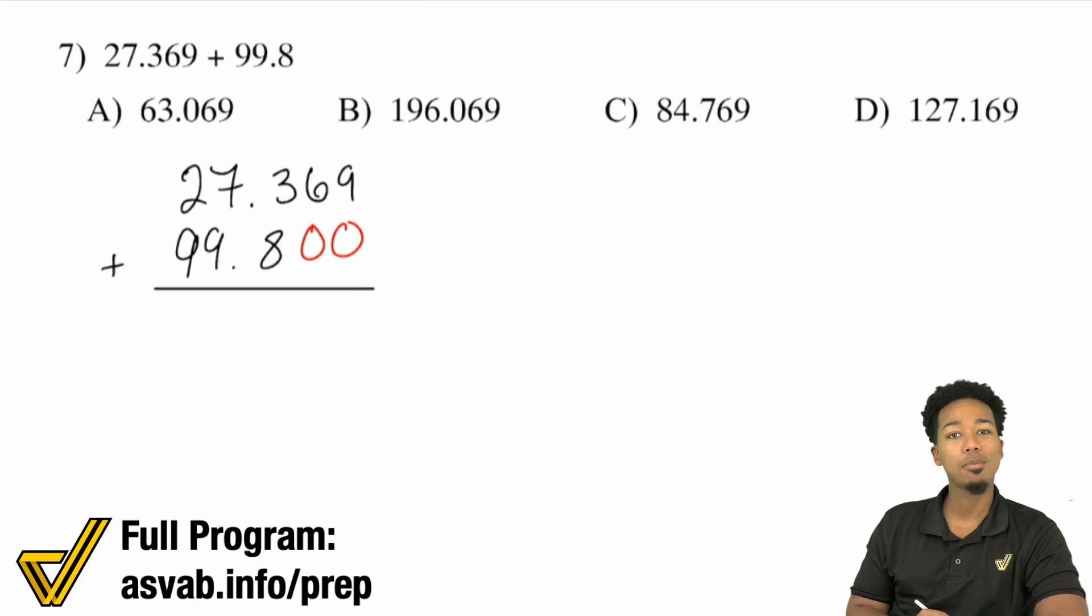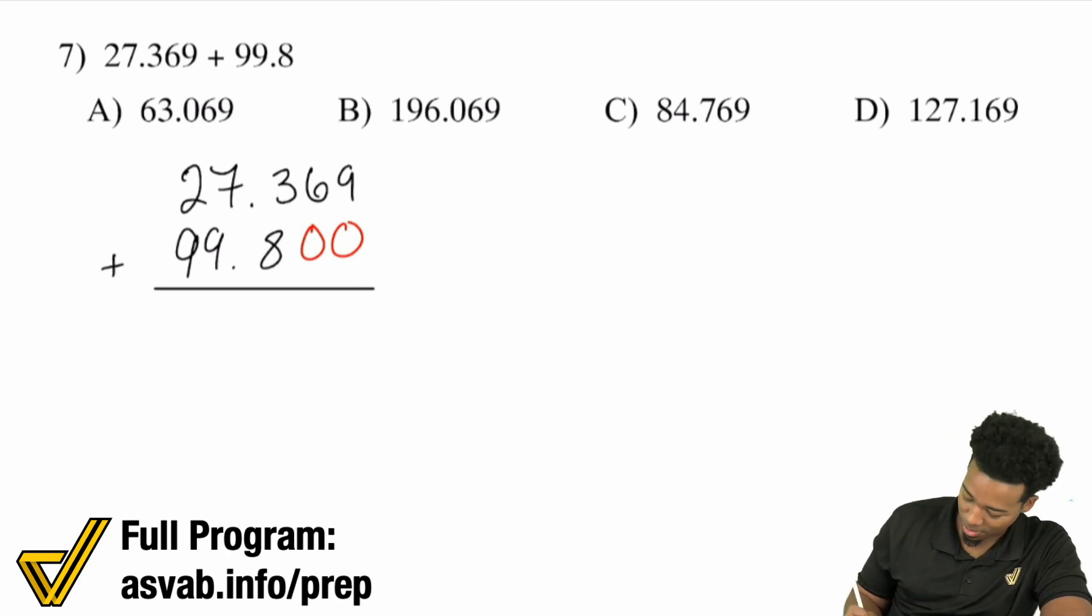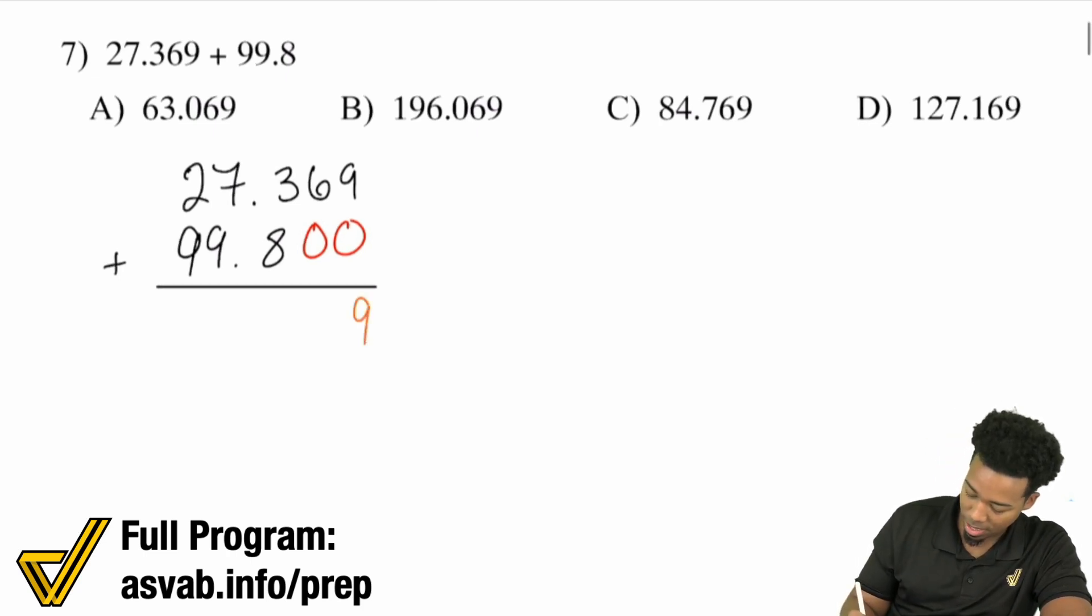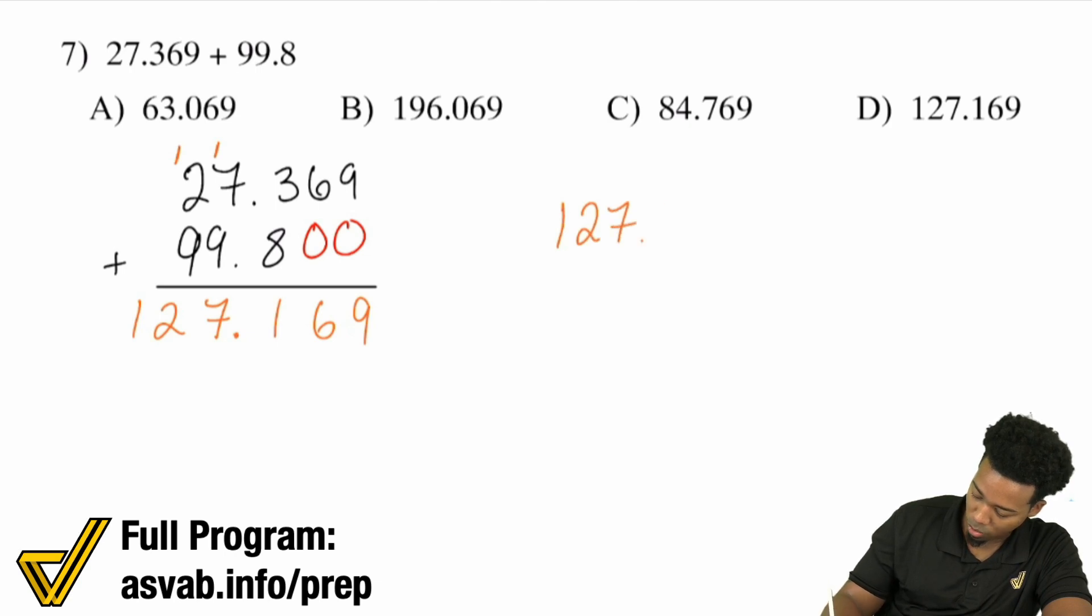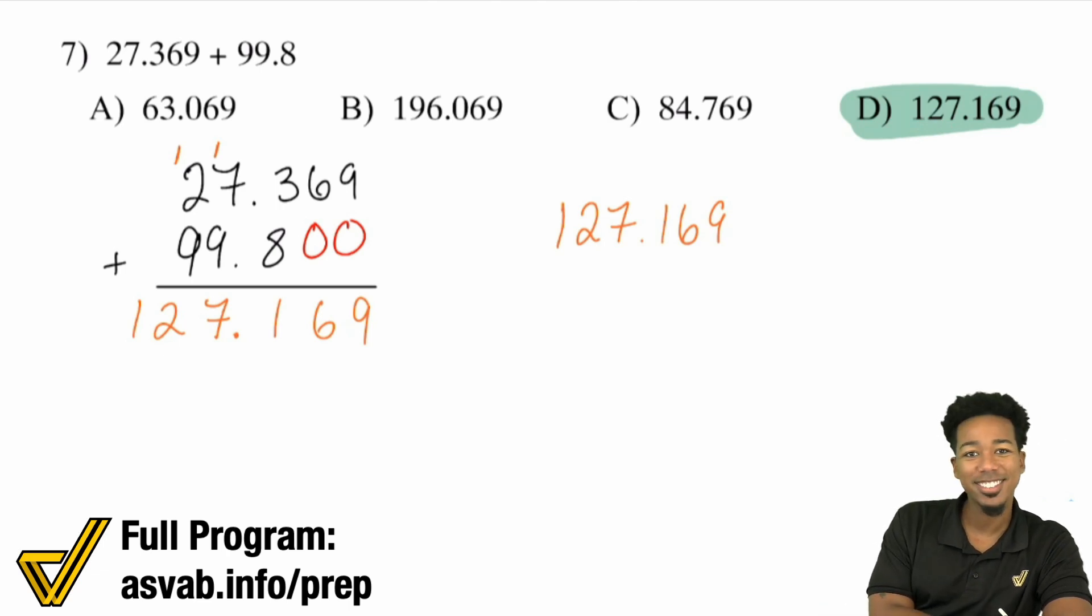So let's go ahead and take care of business. My math party people, we have 9 plus 0. That's going to end up being 9. 6 plus 0 is 6. 3 plus 8 is 11. Carry that 1. Then 1 plus 7 is 8. 8 plus 9 is 17. Carry the 1. 1 plus 2 is 3. 3 plus 9 is 12. Boom. So we have 127.169. And that would be answer choice D right up there. Nice and easy.